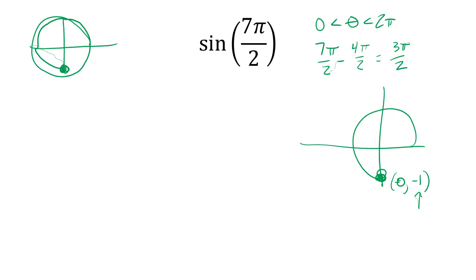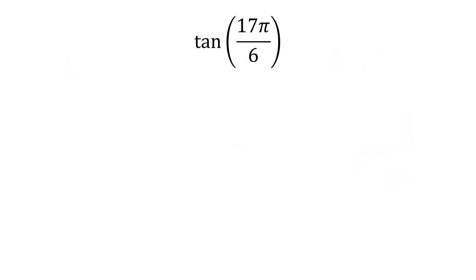You could also think of it as counting: 4π/2, 5π/2, 6π/2, 7π/2 — it's still the same spot. So negative 1 is the answer.